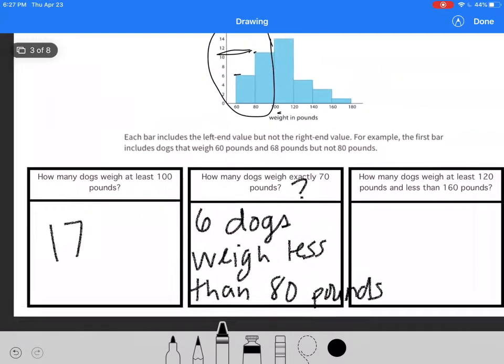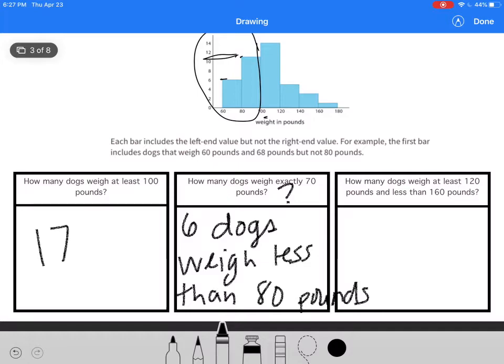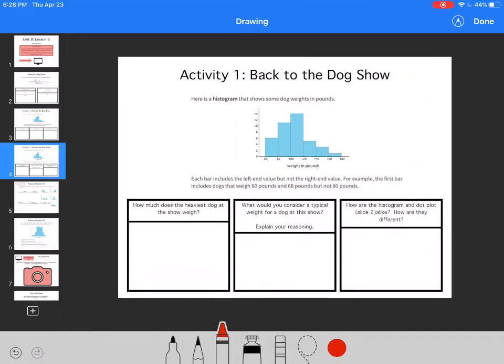How many dogs weigh at least 120 pounds and less than 160 pounds? I'm looking at these dogs right here, so that's going to be 4 and 3, so 7 dogs.